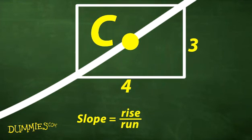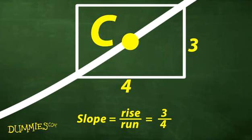Use algebra's slope formula to find the slope at point C. It's exactly 3 fourths. That answers the first question: how steep is the curve at C?